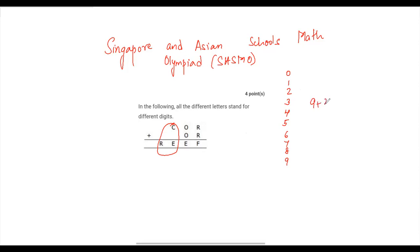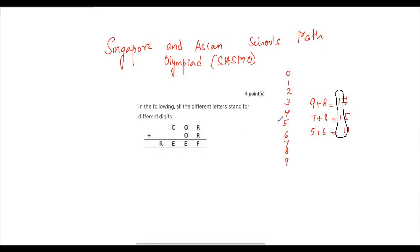Now let's look at some calculations. If you see 9 plus 8 you get 17, 7 plus 8 gives 15, 5 plus 6 gives 11. The common thing is that when you add any two digits, the digit at the tens place will always be a 1. So from this, can we say that R is actually 1?